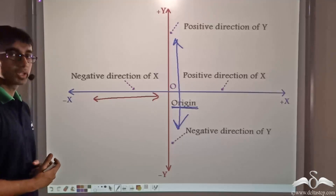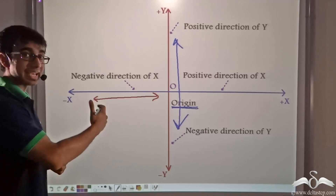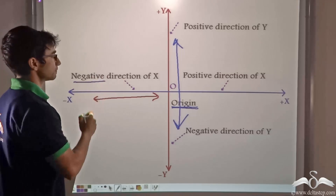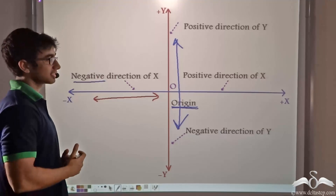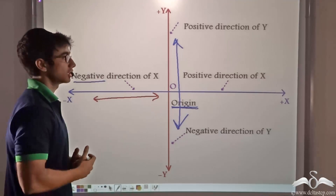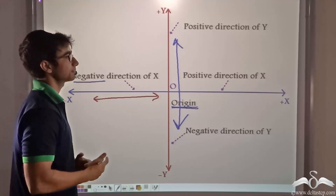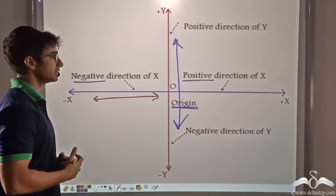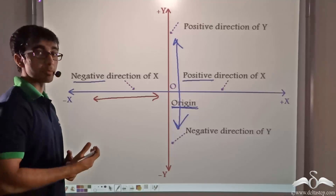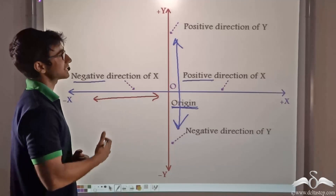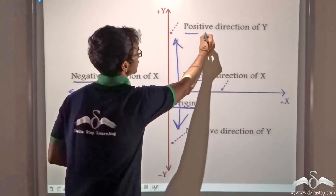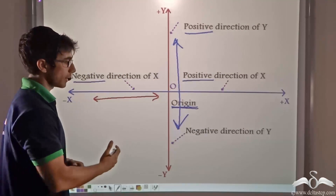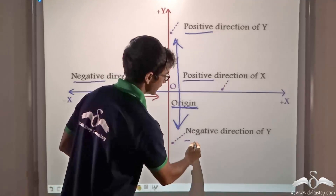All points on the x-axis that lie to the left of the origin are considered as negative, and all points that lie to the right of the origin on the x-axis are considered positive. Similarly, all points that lie above the origin on the y-axis are considered positive, and all points that lie below the origin on the y-axis are considered negative.